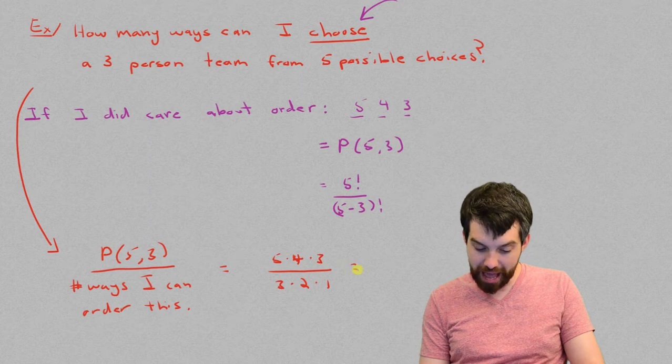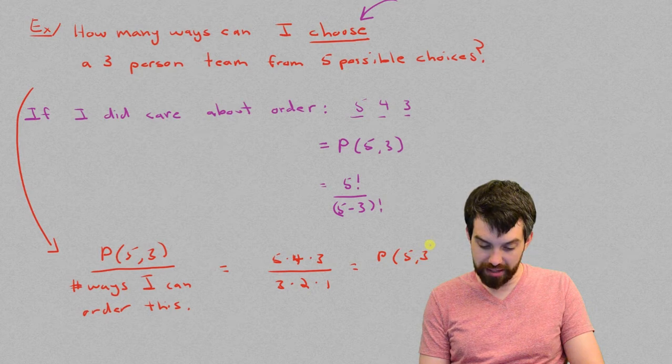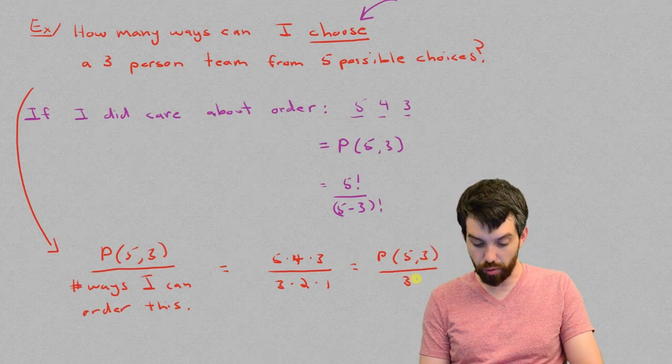In other words, what we have here is pick five comma three, the number of ways I can pick three things from five things, divided out by three factorial.